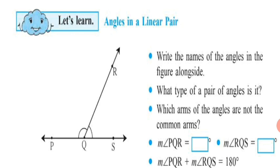Write the names of the angles in the figure alongside. The angles in the given figure are Angle PQR and Angle RQS. These are adjacent angles — two angles having a common arm and separate interiors.